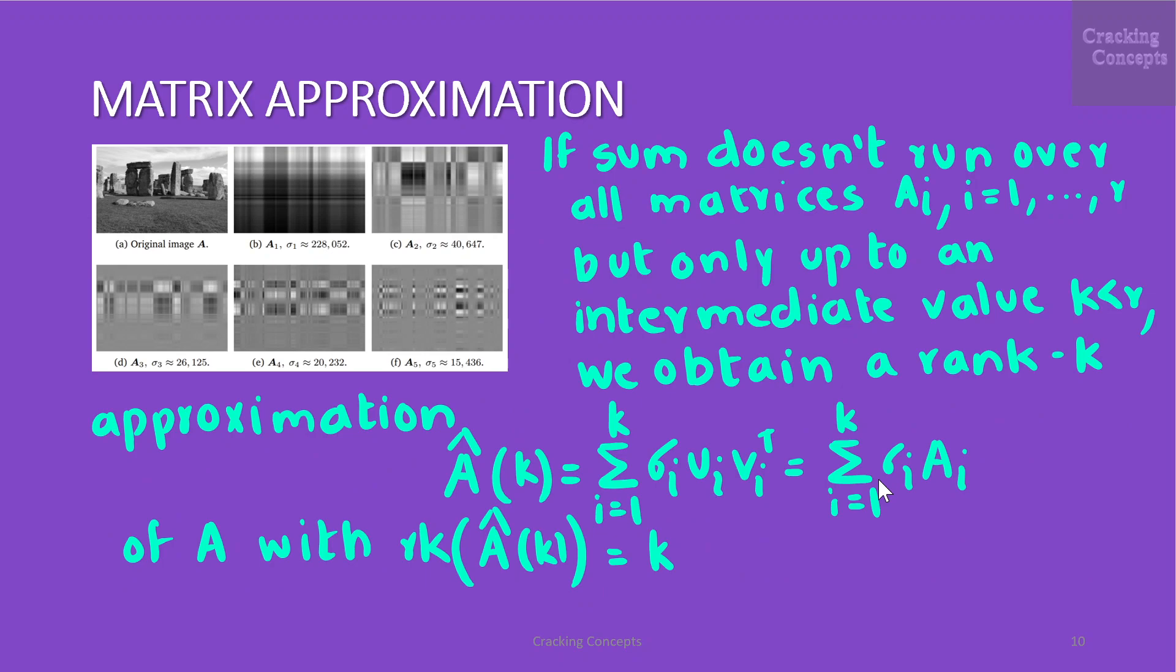Now if the sum that we get does not run over all the matrices A_i where i varies from 1 to R but only up to an intermediate value k which is less than R then we obtain a rank k approximation given by Â_k which can be written as Σ_{i=1}^{k} σ_i u_i v_i^T which can be written as Σ_{i=1}^{k} σ_i A_i of A where rank of Â_k is k.